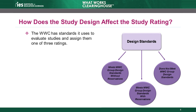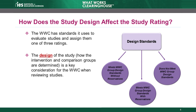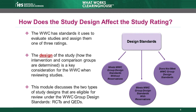The WWC uses a set of standards to evaluate education research studies and assign them one of three ratings. The highest rating a group design study can receive is meets WWC group design standards without reservations. A study can also meet WWC group design standards with reservations. Finally, some studies do not meet WWC group design standards. The design of the study — how the intervention and comparison groups are determined — is a key consideration for the WWC when reviewing studies. There are two designs eligible for review under the WWC group design standards: RCTs and QEDs.